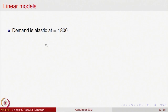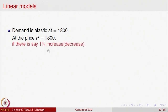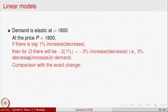Demand is elastic at price 1800 since the coefficient is less than minus 1. At price 1800, if there is a 1% increase or decrease in price, then there will be a minus 3% change in demand — because the coefficient of elasticity is minus 3. So if there is an increase in price, there will be a 3% decrease in demand.